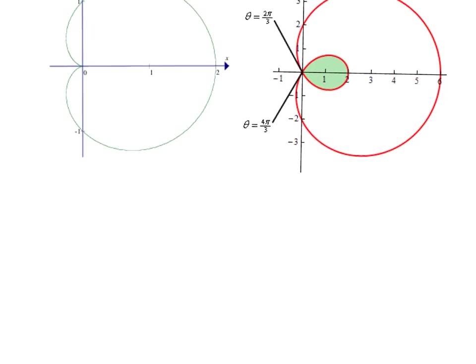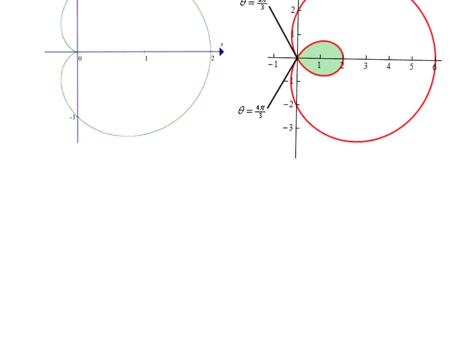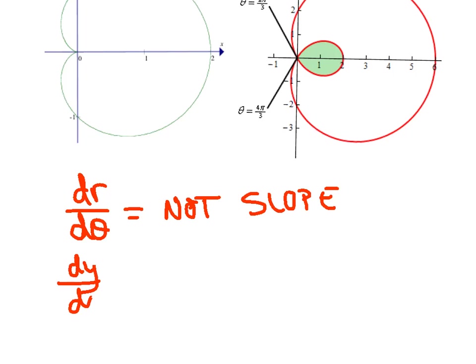Now just a quick recap of our last lesson. Conceptually we tried to really establish the fact that the derivative of r with respect to theta did not measure slope. We tried to get that out of our heads, but we did say dy over dx, that does measure slope.